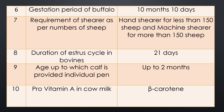Question six: Gestation period of buffalo. Answer is 10 months 10 days. This is roughly approximate — two days more or less can occur.